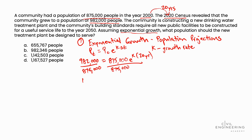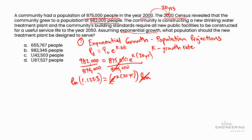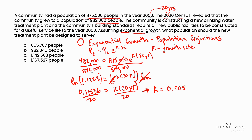That leaves us with 1.1223 on this side of the equation, equal to E raised to K times 20 years — the 875,000 cancels out. To eliminate E, we take the natural log of both sides. The natural log of 1.1223 equals the natural log of E raised to K times 20. Natural log and E cancel out, giving us 0.11536 equal to K times 20 years. Dividing both sides by 20, we determine that K is equal to 0.005768.